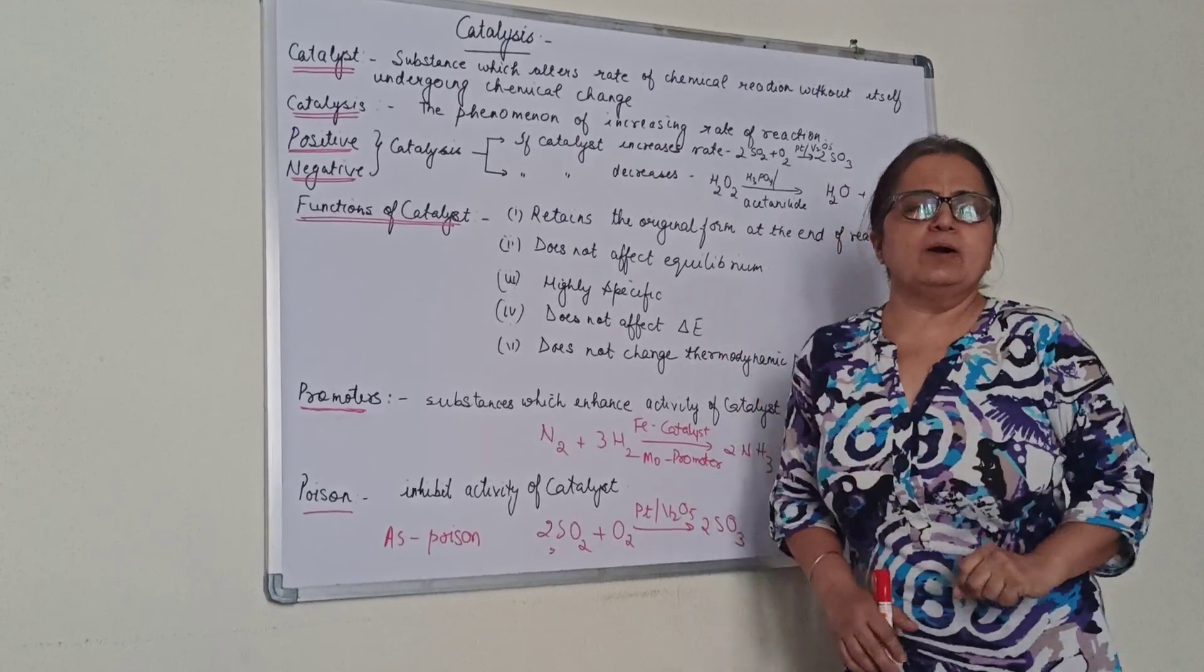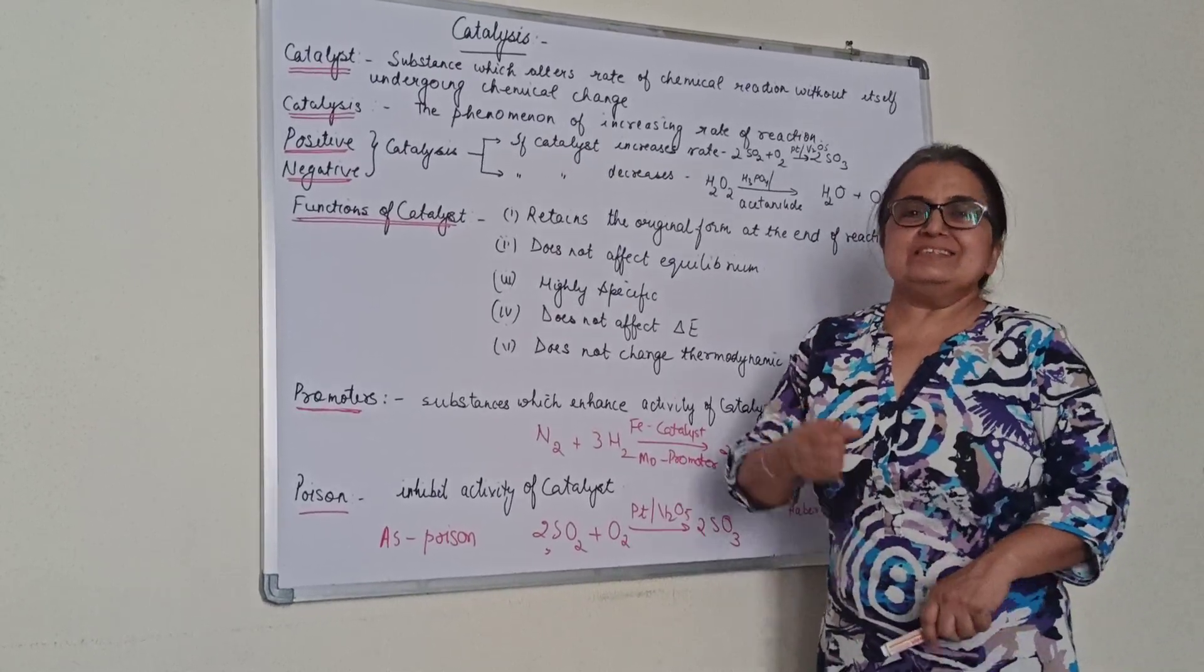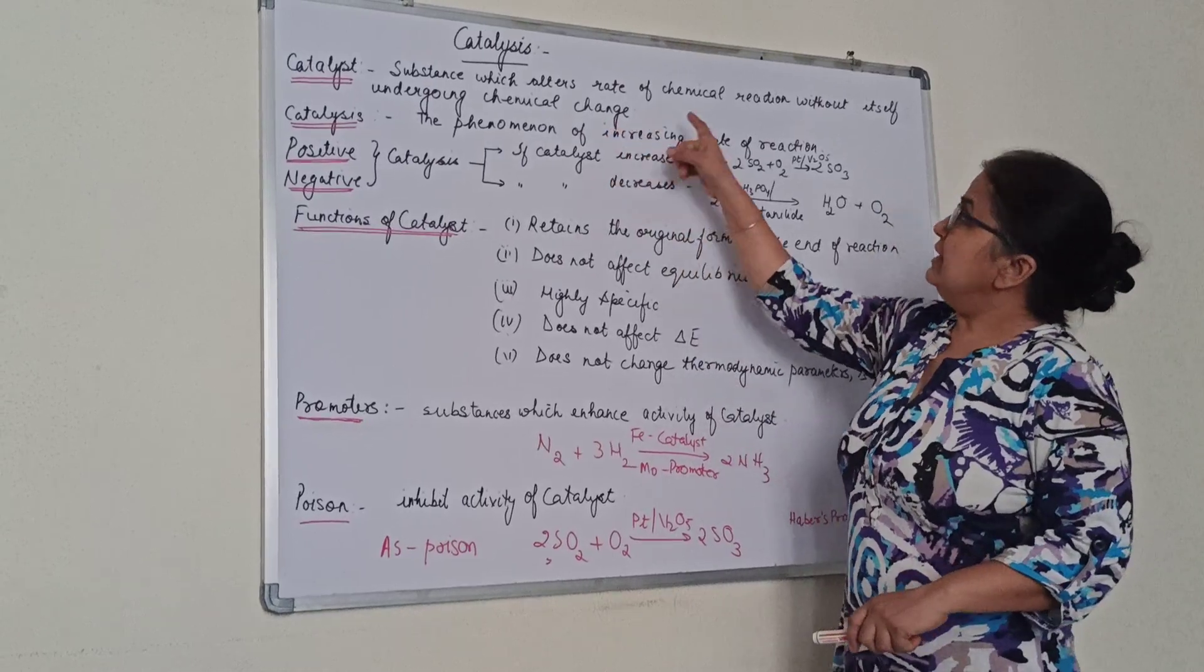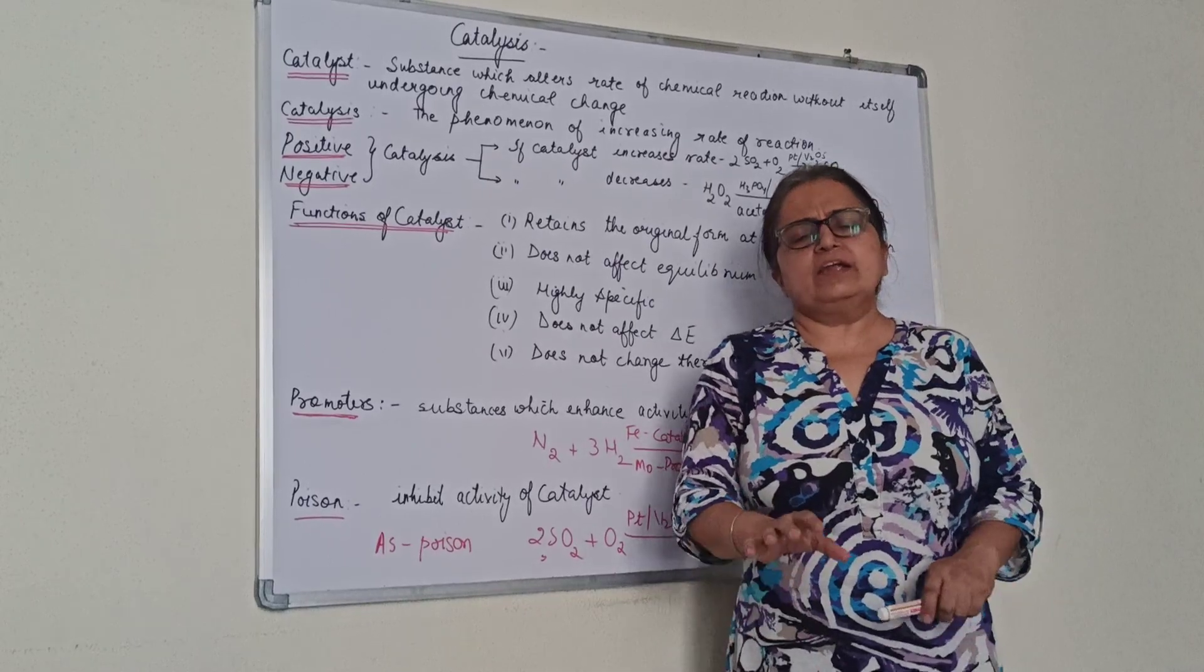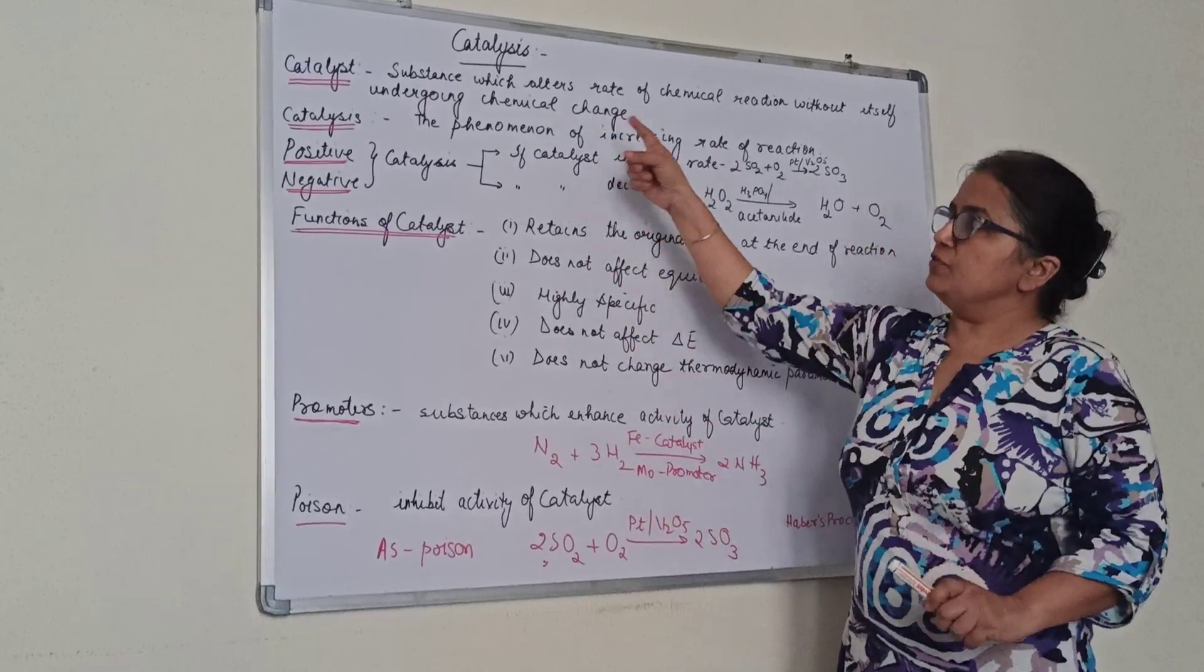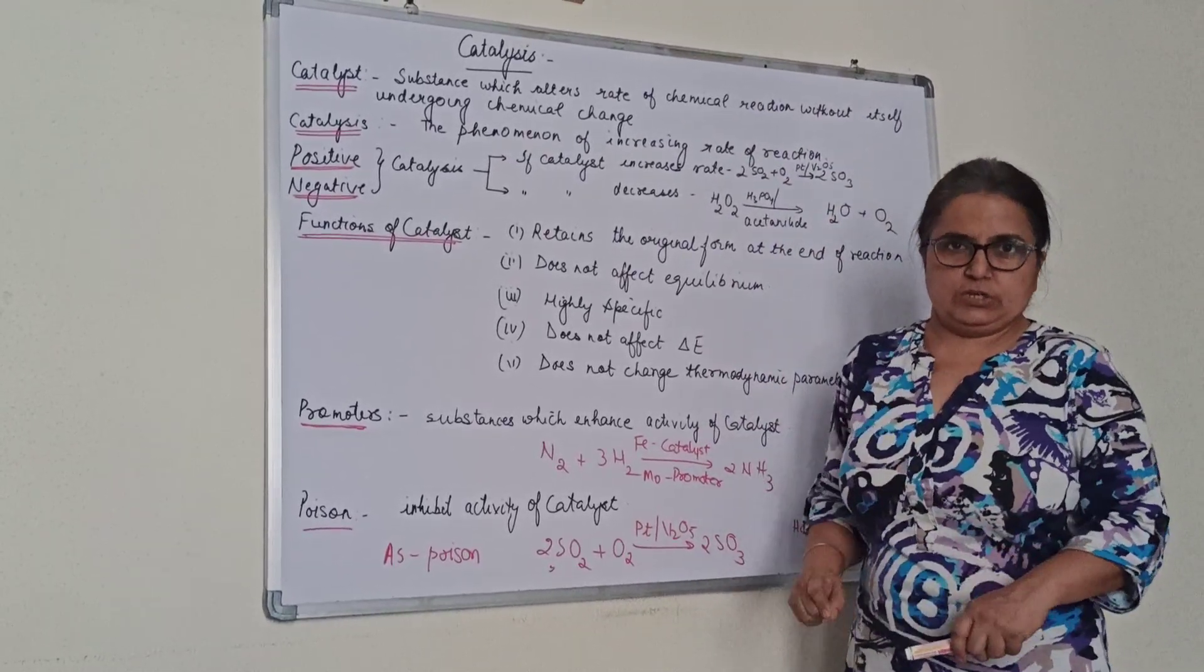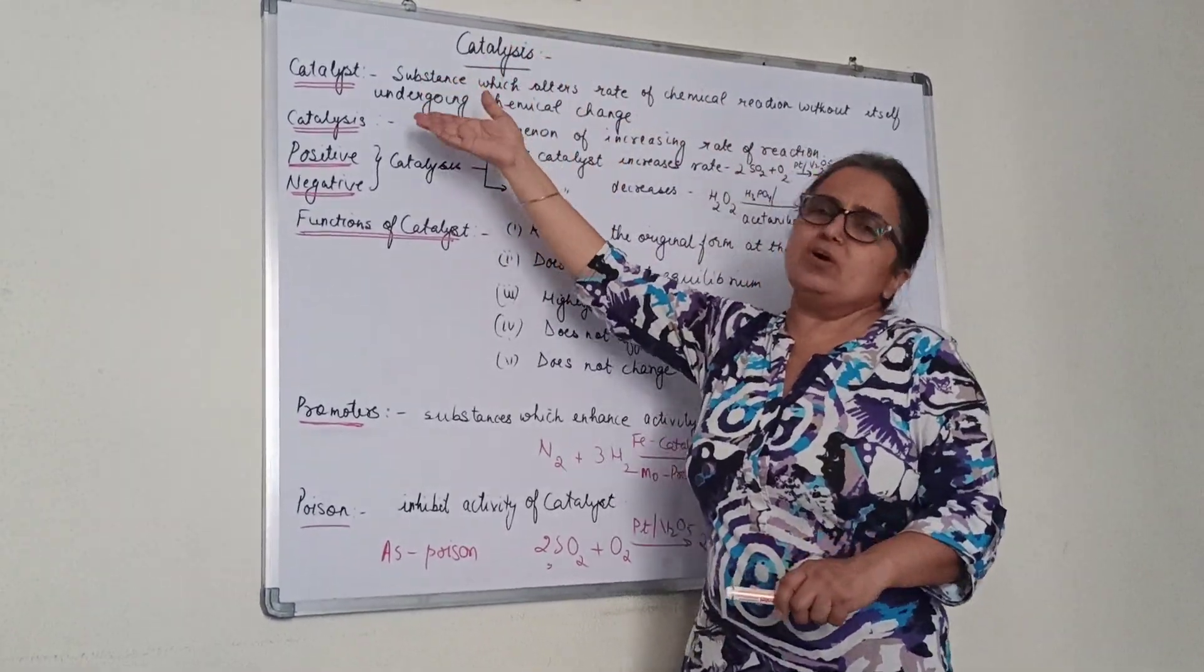Today we are talking about catalysis. First, what is a catalyst? A catalyst is any substance which alters the rate of a reaction—it may increase or decrease it. Normally, it does not take part in the reaction. Even if it takes part physically, chemically nothing happens to the catalyst. The definition: a substance which alters the rate of a chemical reaction without itself undergoing chemical change.